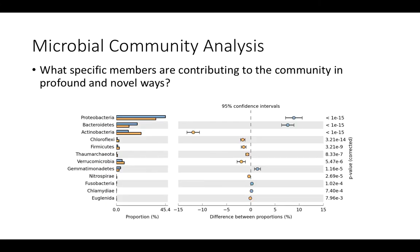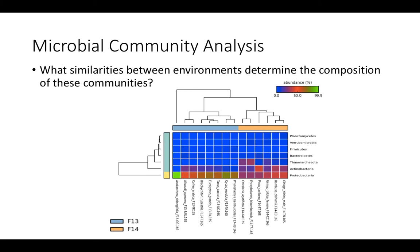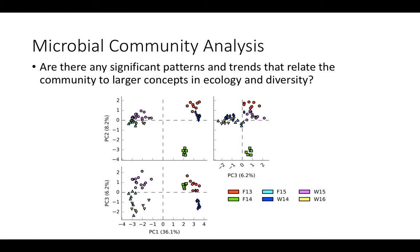Here are some examples of the plots that you can generate using STAMP. You can use an extended error bar plot to discuss what specific members are contributing to the community in profound and novel ways. You can use a heat map plot to discuss what similarities between environments determine the composition of the communities found within those environments. And you can also look at a PCA to discuss if there are any significant patterns or trends that relate the community to larger concepts in ecology and diversity.